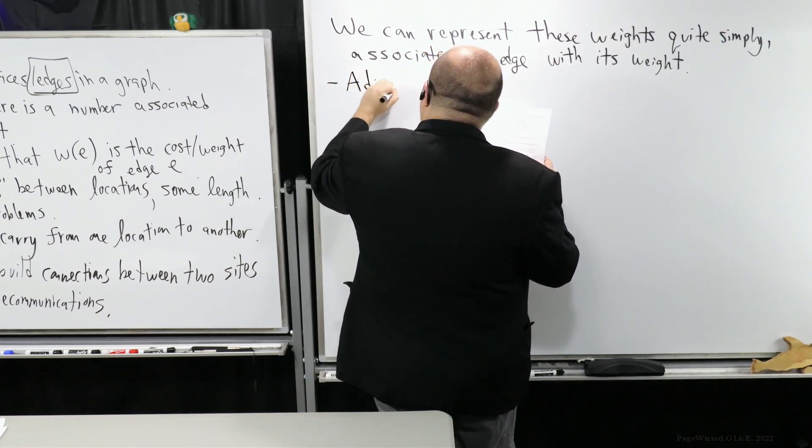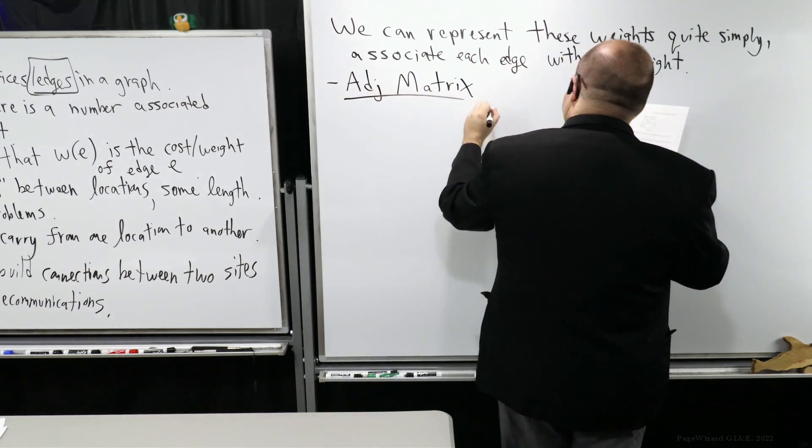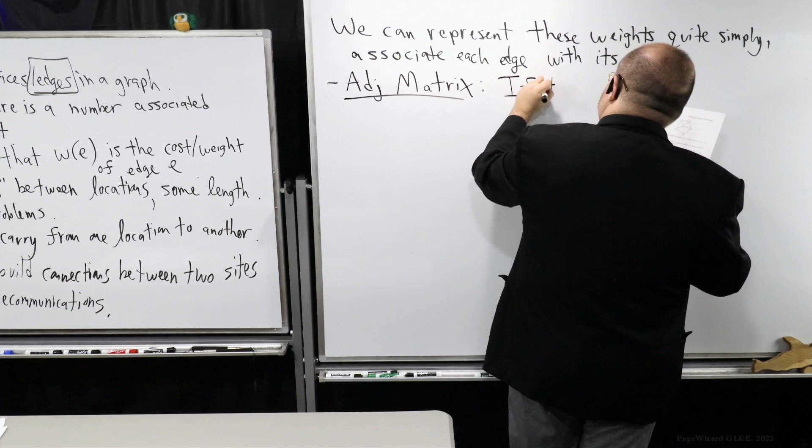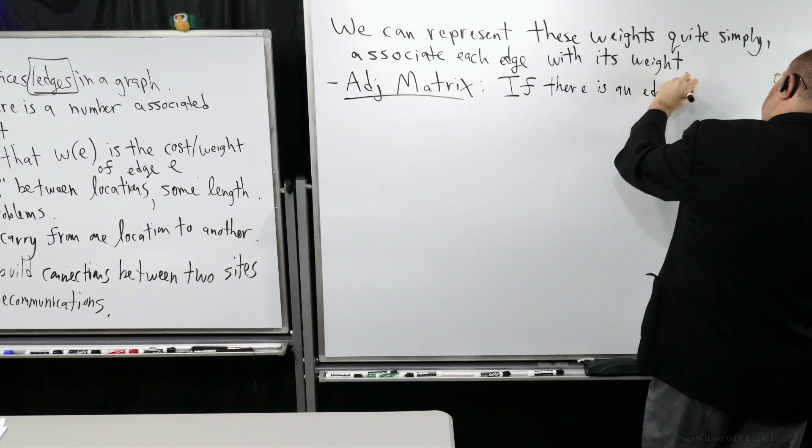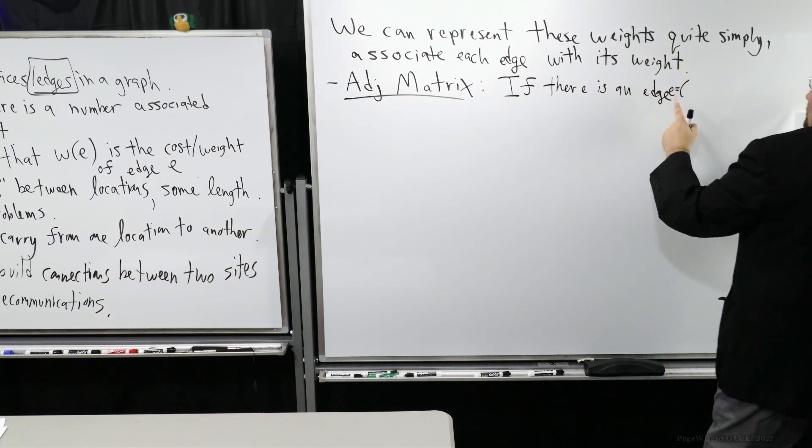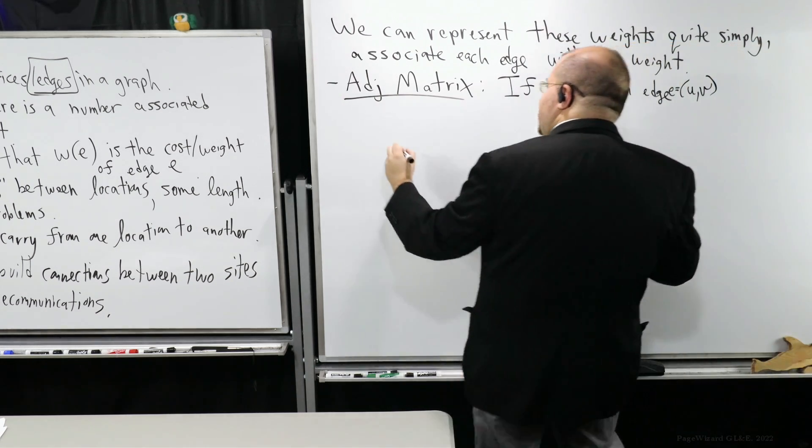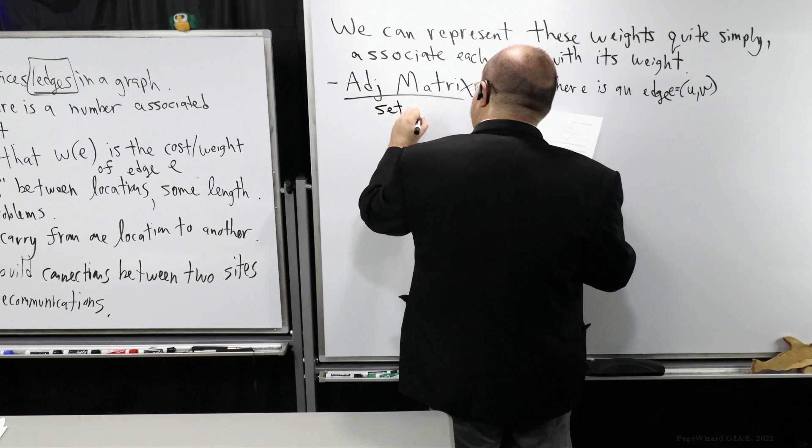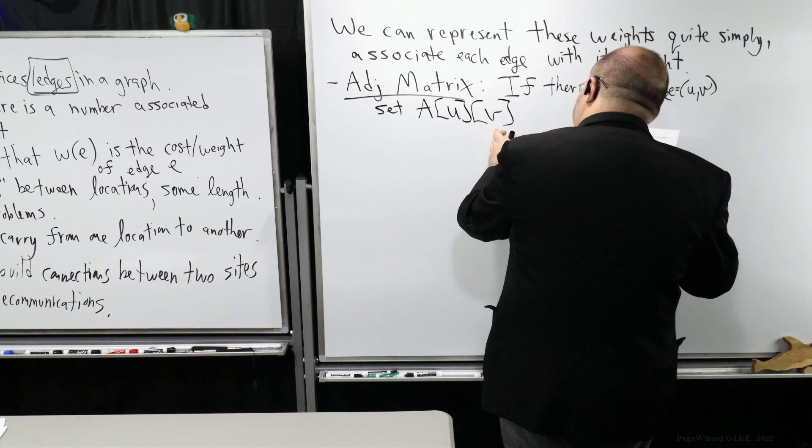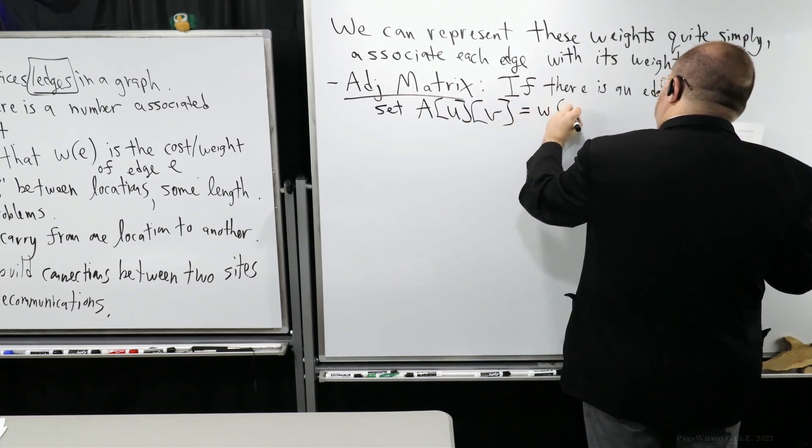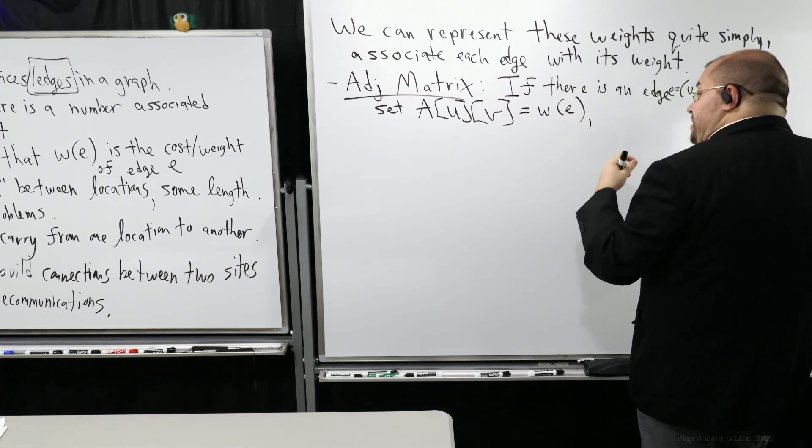In an adjacency matrix, a common way to deal with this, if there is an edge E equal to UV, what we're going to do is we're just going to simply assign this appropriate slot or entry in the two-dimensional table or two-dimensional array, A sub U sub V, I'm going to assign that to be the weight of the edge. Pretty easy, right? And whenever there does not exist an edge, such as there is no adjacency there.